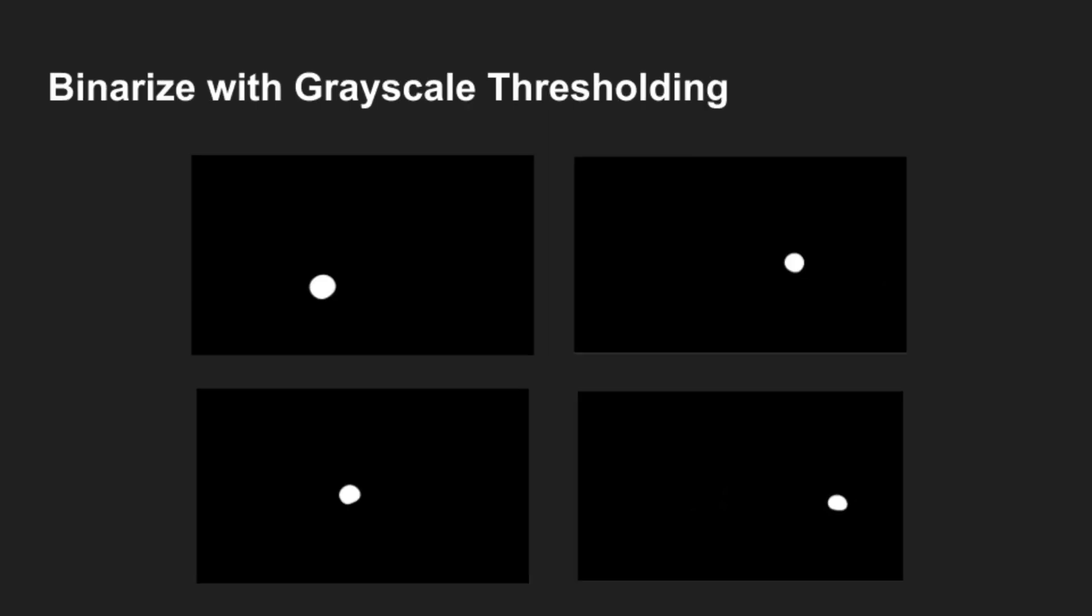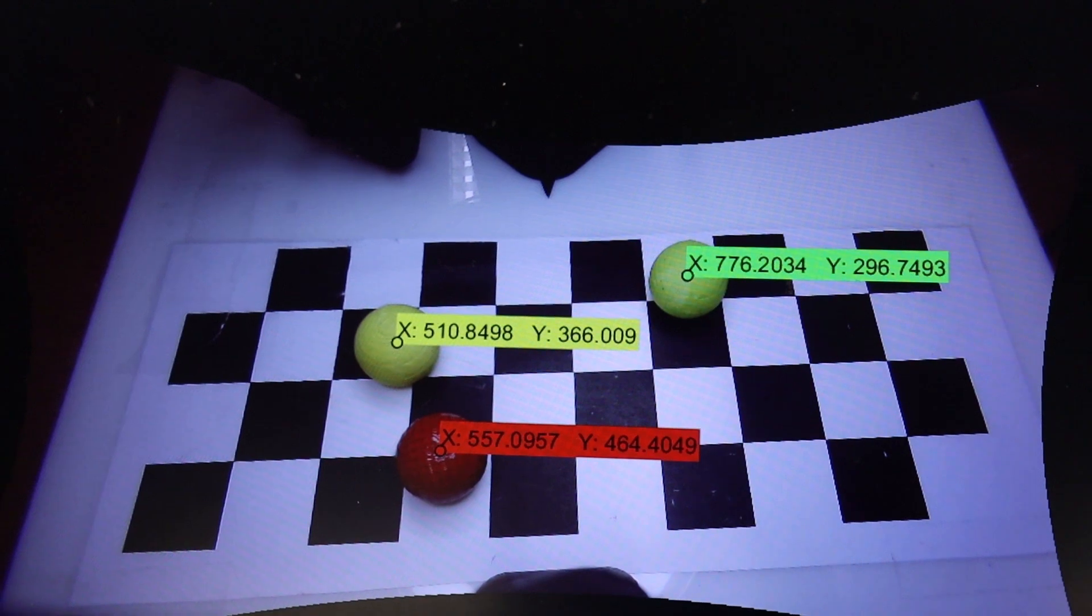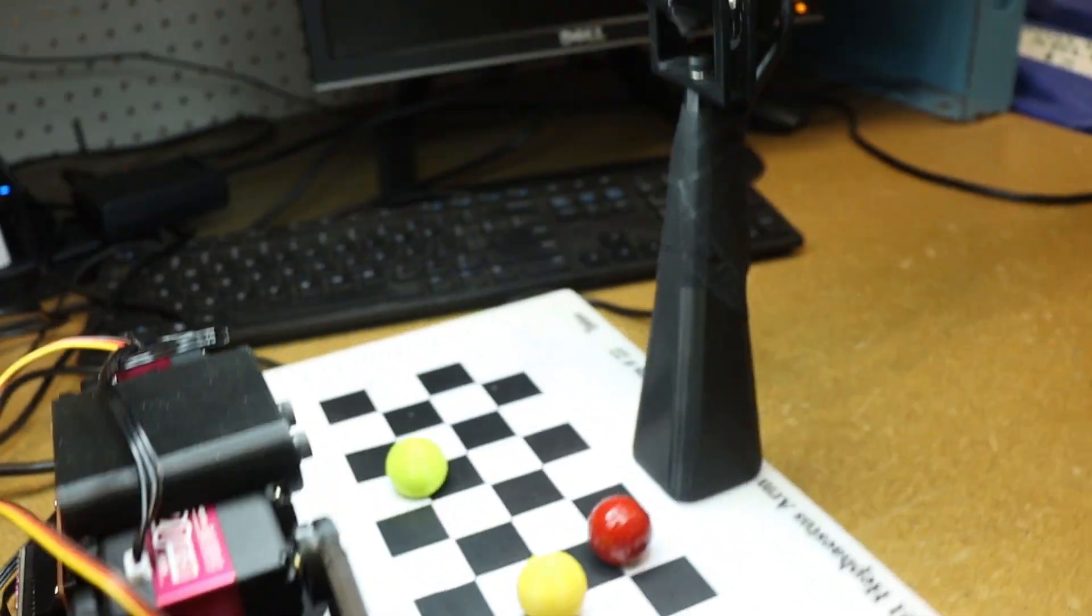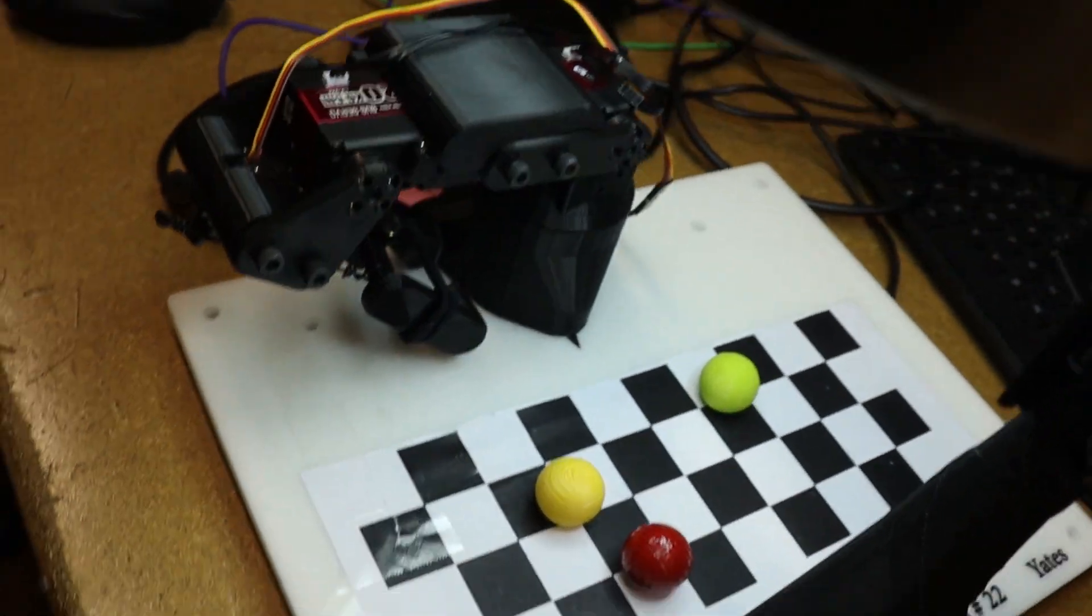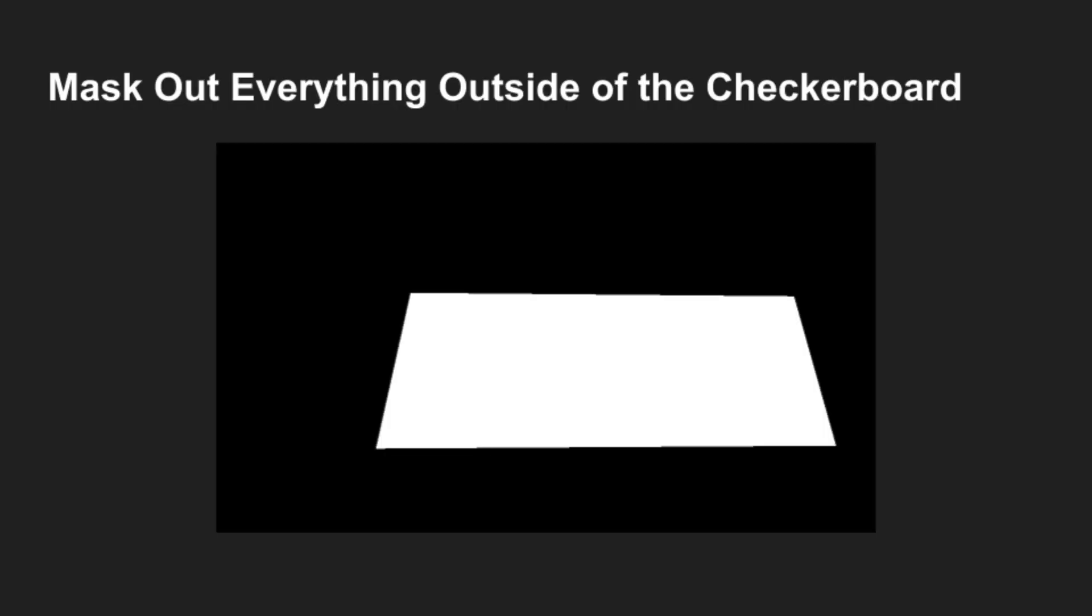Then, the image is binarized using grayscale thresholding to acquire a black and white image for each of these objects. This makes finding the centroid very easy by calling the MATLAB function RegionProps, which helps to solve for the location within the workspace. Finally, each of the binarized images are combined with a polygon mask intended to block out any colored objects outside of the robot's workspace.